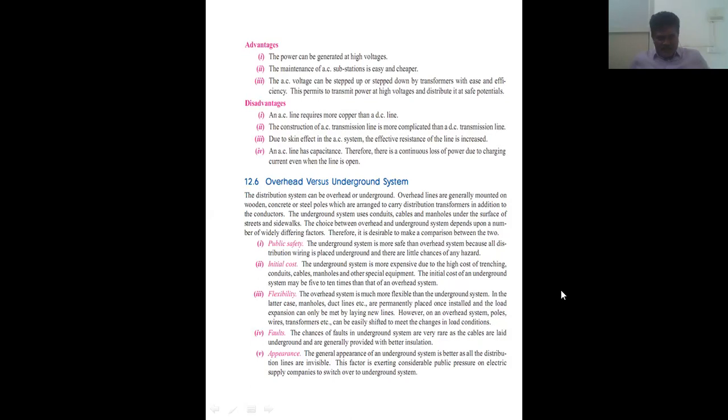Comparing overhead and underground systems: for public safety, the underground system is more safe than overhead because distribution conductors are placed underground with little chance of harm. However, the underground system is more expensive due to high cost of trenching, cables, manholes, and other special equipment.